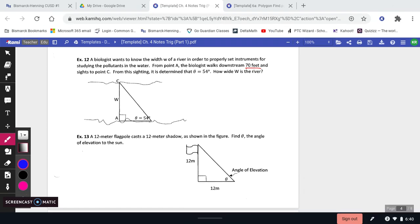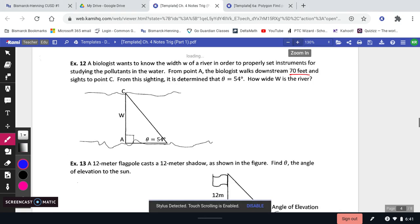Okay, we're going to continue this section, I think it's section D, with SOHCAHTOA and we're just going to do some basic right triangle trig word problems. So here, a biologist wants to know the width w of a river in order to properly set instruments for studying the pollutants in the water. From point A the biologist walks downstream 70 feet and sights to point C. From this sighting it is determined that theta is 54 degrees. How wide is the river?